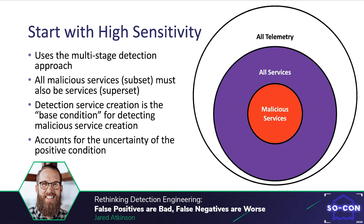In the context of detecting malicious service creation, we can first reduce the problem set to only focus on events that could be indicative of malicious service creation, breaking the problem into two parts: identifying service creation, and differentiating between benign and malicious service creation. Identifying service creation is a relatively easy step, while differentiating intent is often much more difficult and full of uncertainty. The current trend is to focus efforts on detecting malicious services directly, but I'd recommend opening up the focus to reduce the likelihood of false negatives in the initial detection stage.